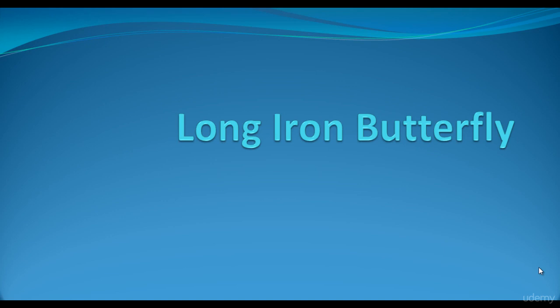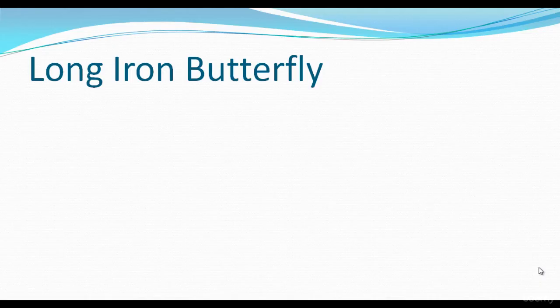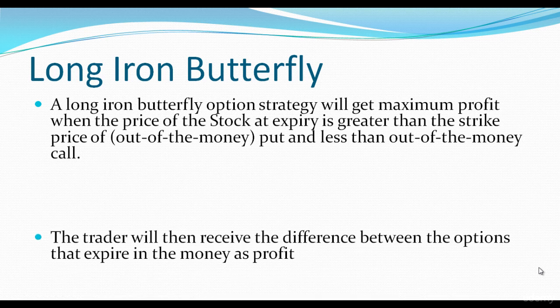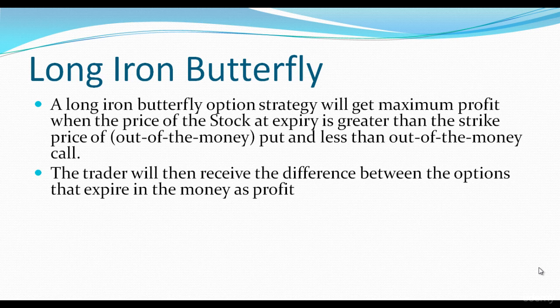The long iron butterfly, also known as the reverse iron butterfly, will get maximum profit when the price of the stock at expiry is greater than the strike price of the out-of-the-money put and less than the out-of-the-money call.